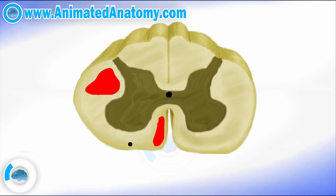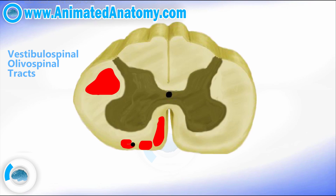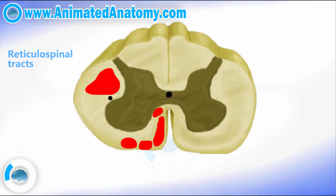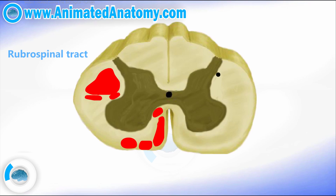There are also the extrapyramidal tracts — the vestibulospinal tract and the olivospinal tract. We also have the reticulospinal tract, which appears in two locations, and there is also the rubrospinal tract. Those were basically the motor or descending or efferent pathways.